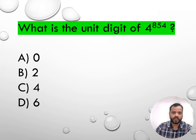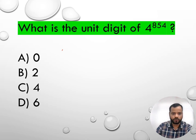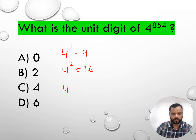We have to find the unit digit of 4 to the power 854. So 4 to the power 1 is 4, 4 to the power 2 is 16, 4 to the power 3 is 64, and 4 to the power 4 is 256.